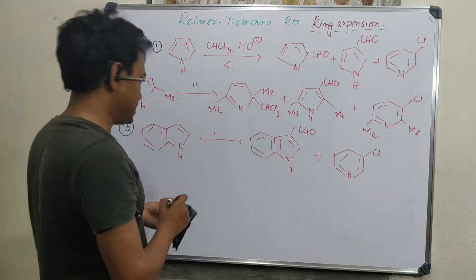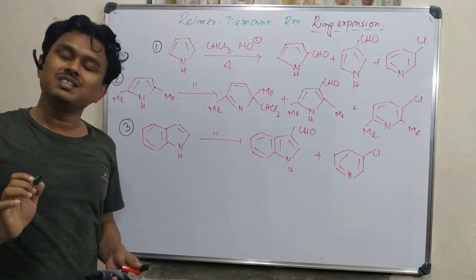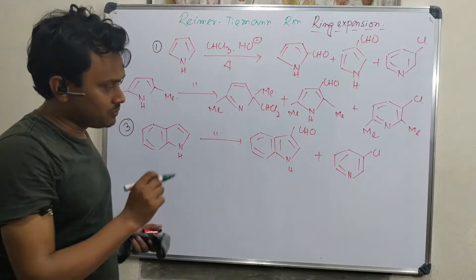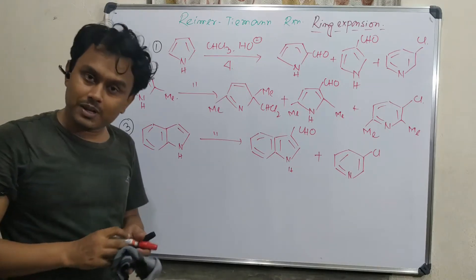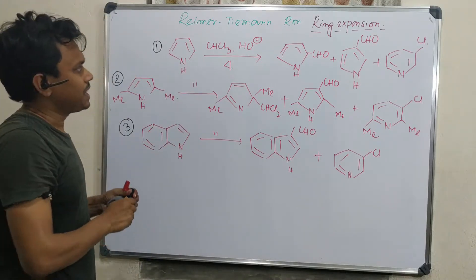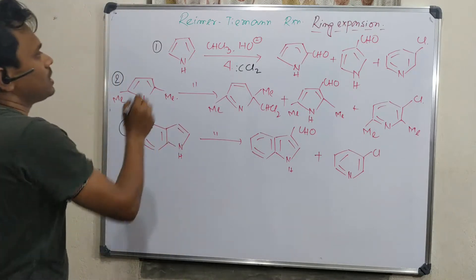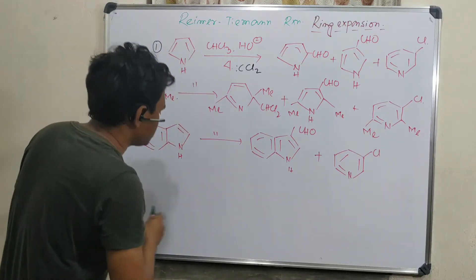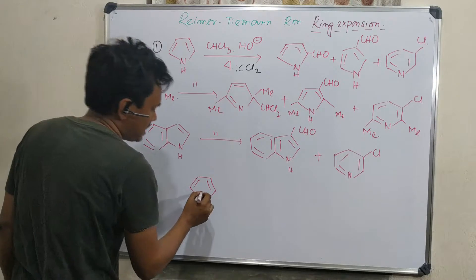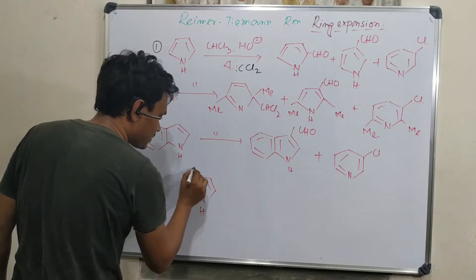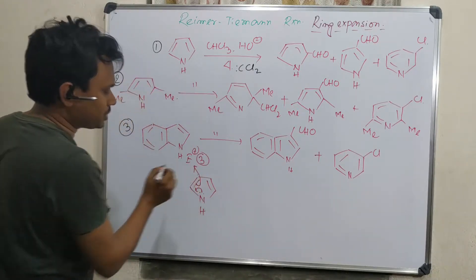Let's discuss another example. This example is more important because here the Reimer-Tiemann reaction is happening on pyrrole derivatives, meaning heterocyclic moiety. In the previous example, the five-member ring attached to benzene underwent ring expansion. You can consider this similarly. Everything happens through the dichlorocarbene intermediate, which is electrophilic. If we consider this pyrrole, it has resonance forms. It can have resonance in this way. An electrophilic attack will be here, so there will be substitution at this center.